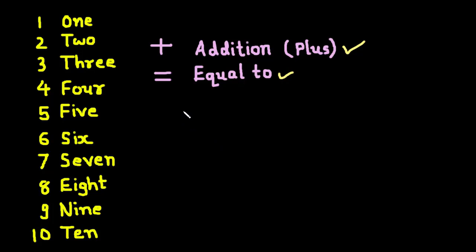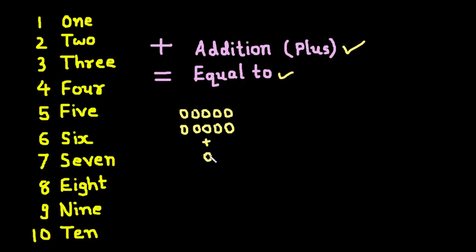Suppose we have 10 marbles — 1, 2, 3, 4, 5, 6, 7, 8, 9 and 10 marbles. And now I am adding one more marble. Here I have used this plus sign to add one more marble. Now we have 10 plus 1 marble.